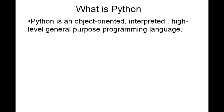So Python is an object oriented, interpreted, high level, general purpose programming language. There are some significant words there: object oriented, interpreted, high level, general purpose. So let's try to understand what those terms mean.